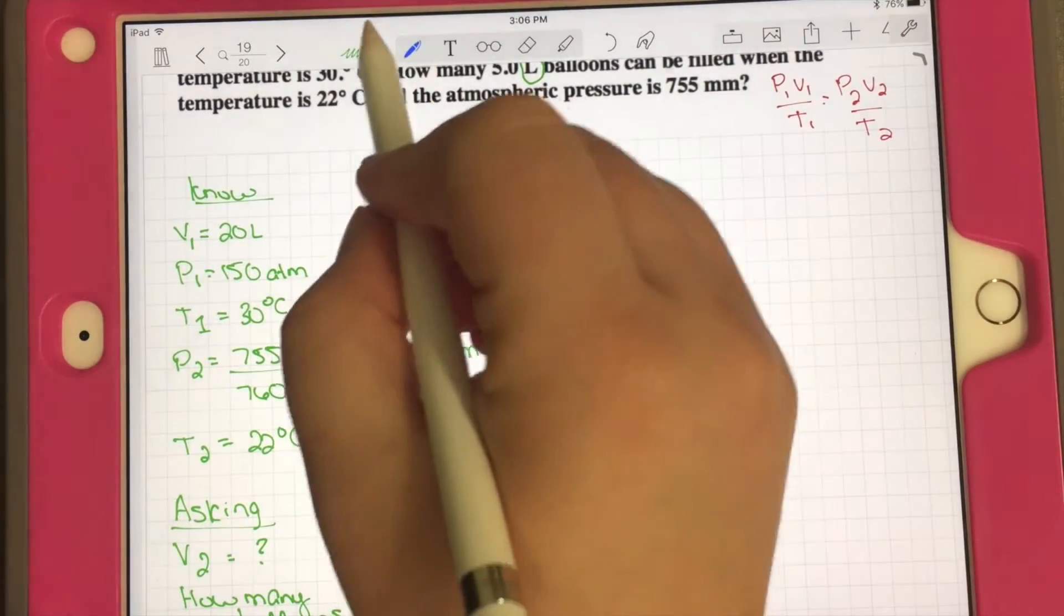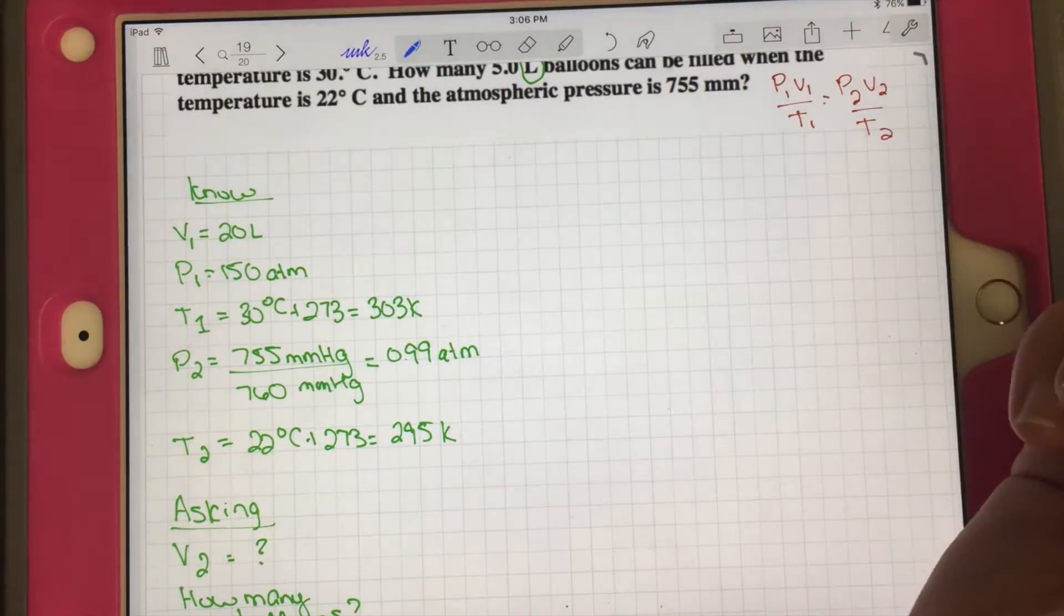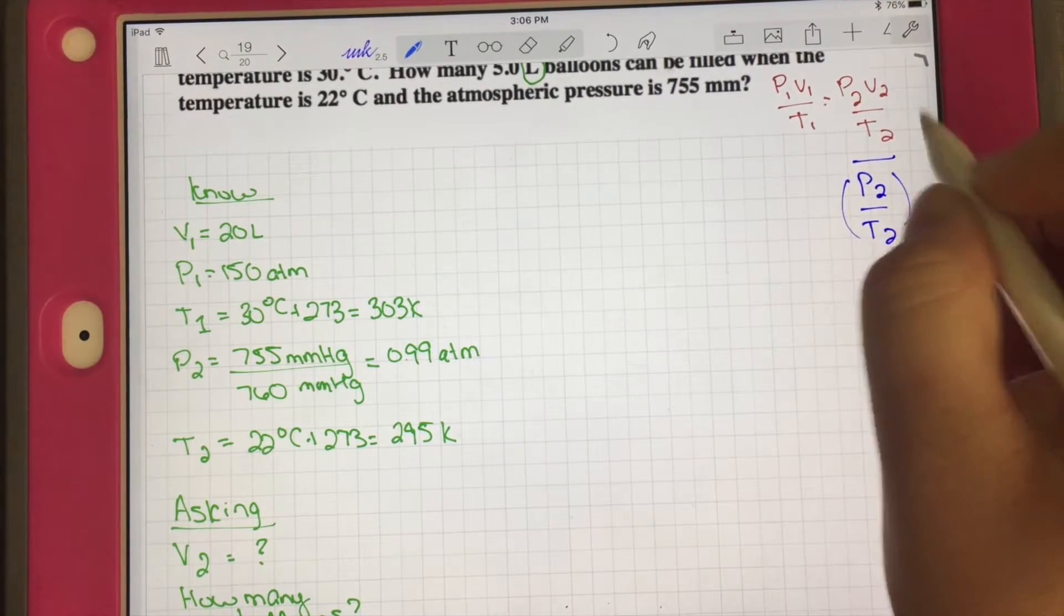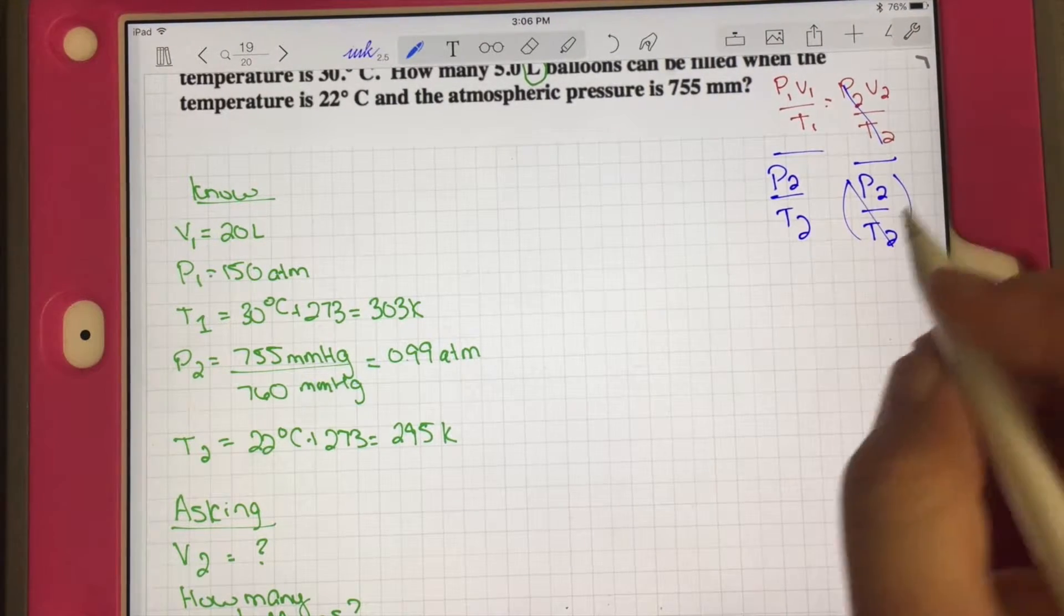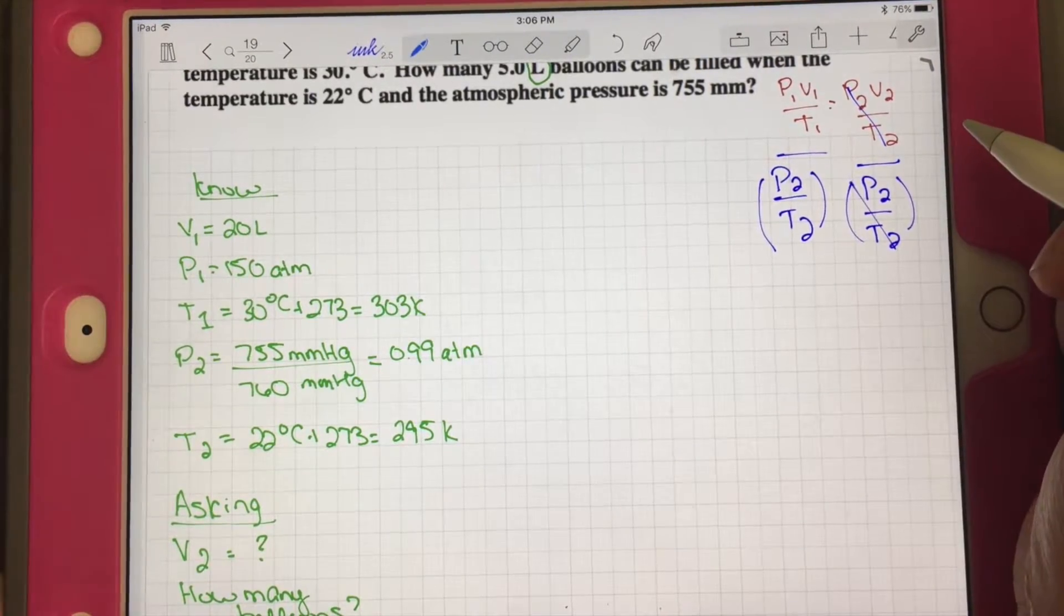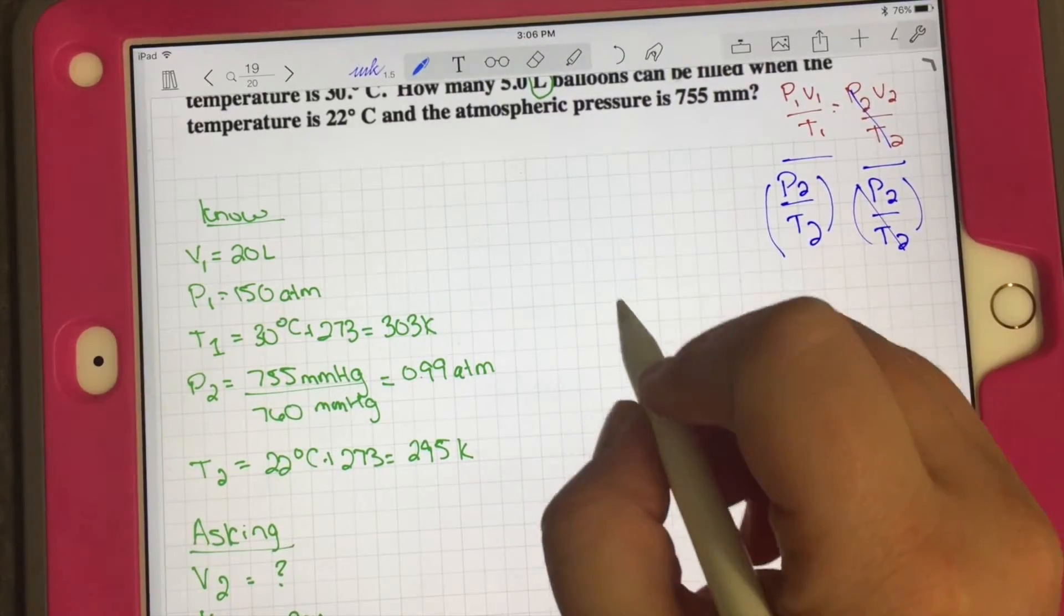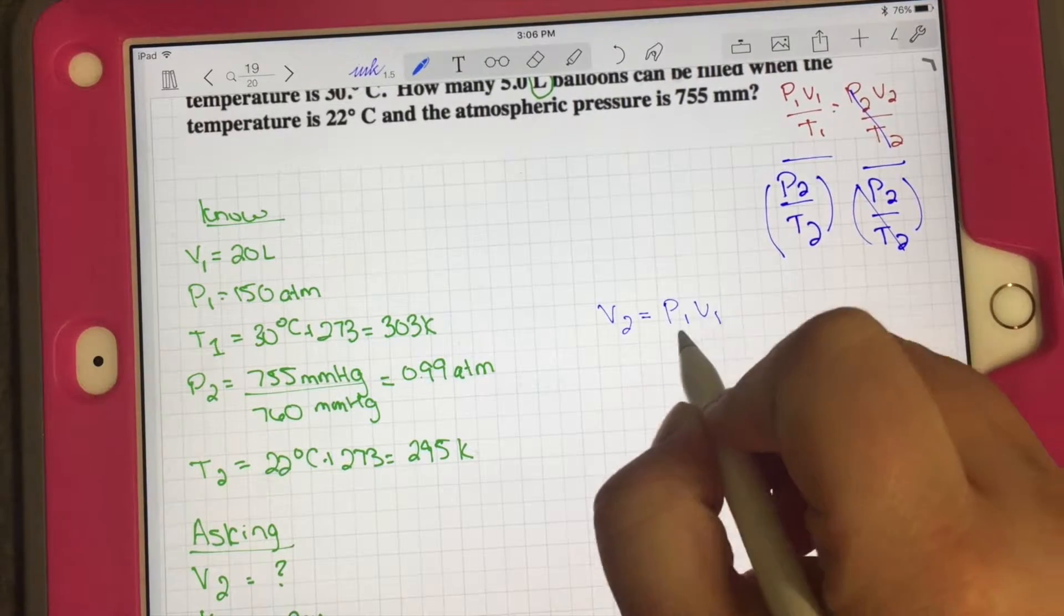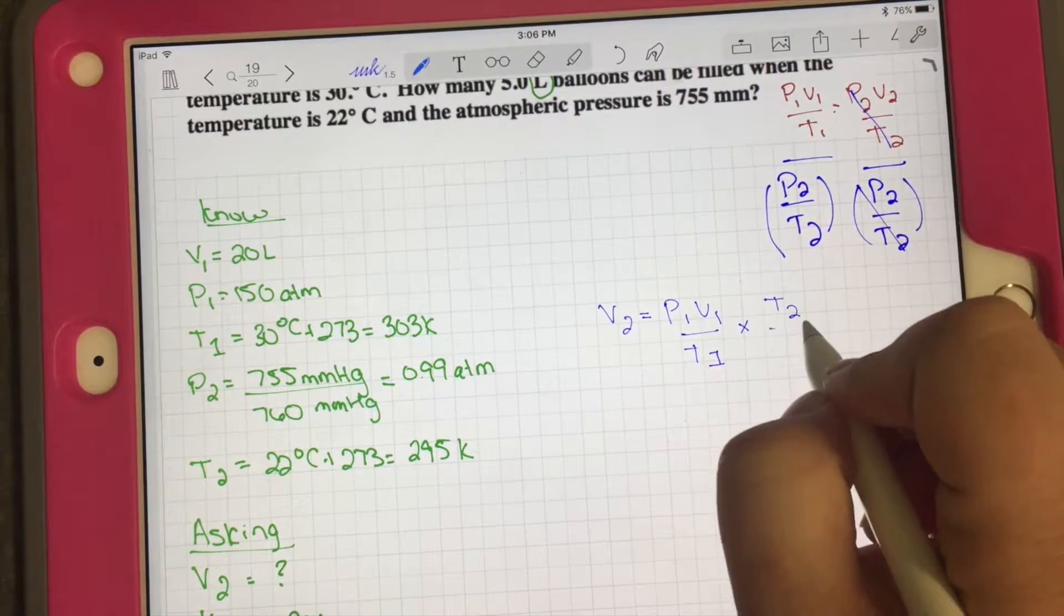We also have to figure out how many balloons, so we're looking for V2. We have to isolate V2 from our formula. We're going to have to divide by P2 over T2. When we divide by a fraction, we multiply by the reciprocal. So V2 is going to equal P1 V1 over T1 times T2 over P2.